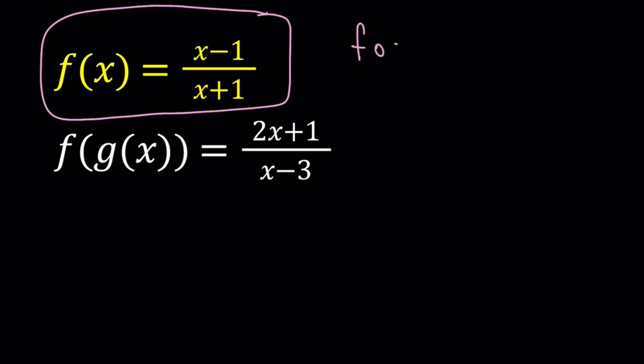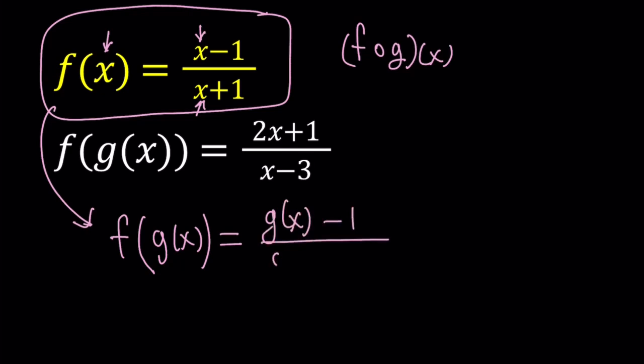So that's what we're going to do everywhere in f(x). We're going to replace x with g(x). And that gives us the following: f(g(x)) equals, on the right-hand side, g(x) minus 1 divided by g(x) plus 1.